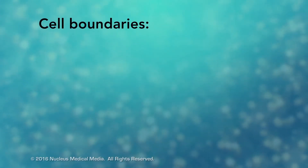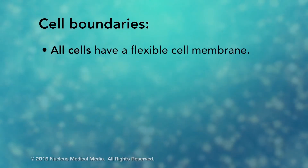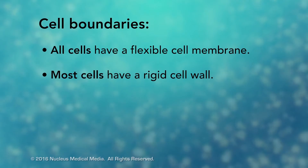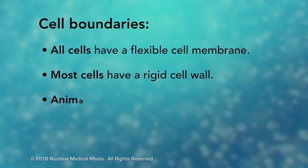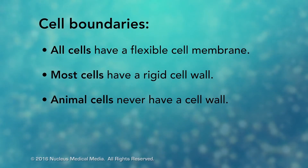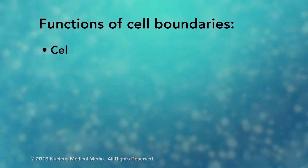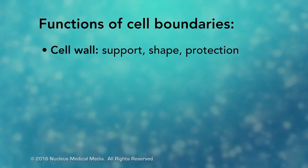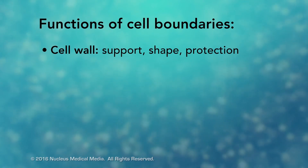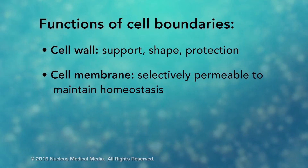Remember that all cells have a flexible cell membrane, and most cells also have a rigid cell wall. It's important to know that animal cells never have a cell wall. The cell wall provides support, shape, and protection to the cell. And the cell membrane is selectively permeable in order to help maintain intracellular homeostasis.